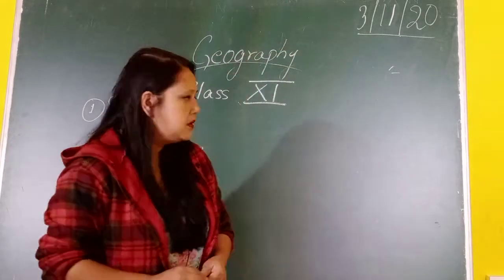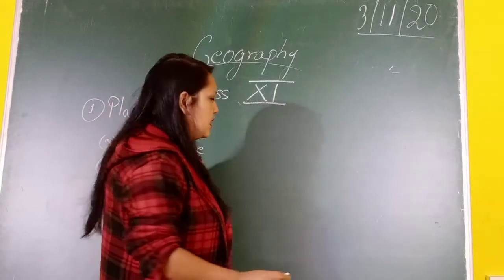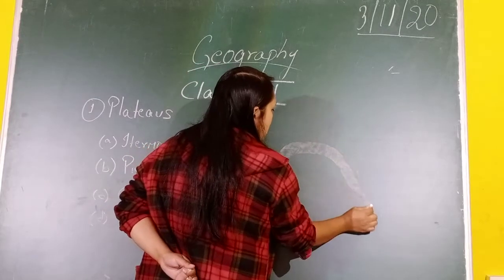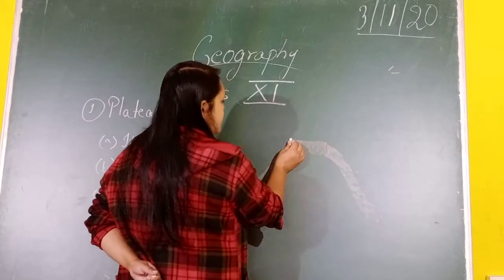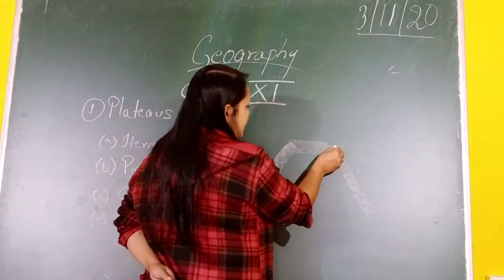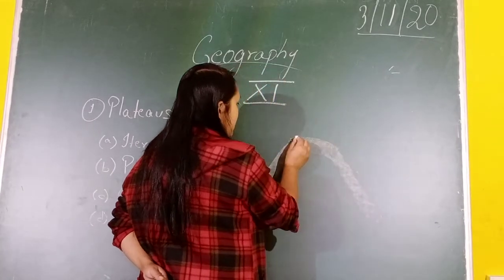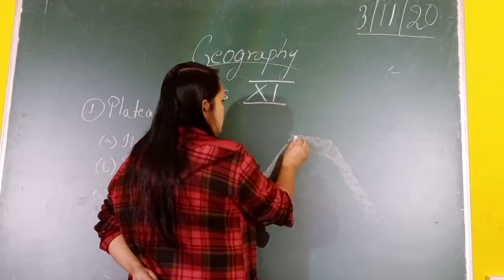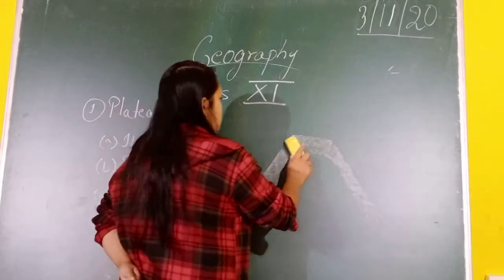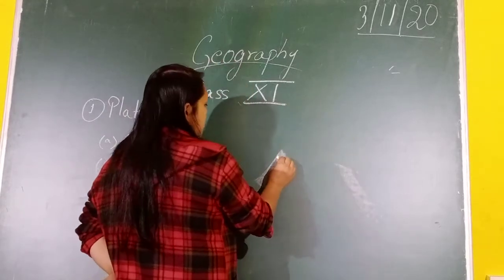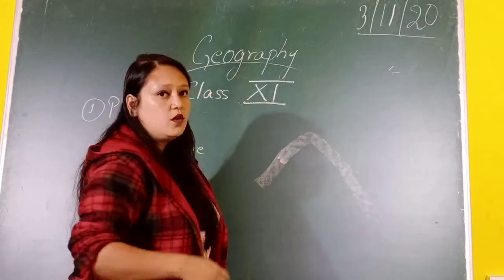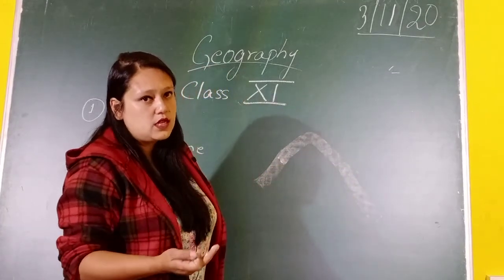Now, what do you mean by a plateau? In simple terms, a plateau is an elevated land which is almost horizontal or flat at the top, and its sides are slanting — the slope at the side is slanting. At the top it has a large surface area. Sometimes a mountain may be pointed, with a very small surface area at the top.